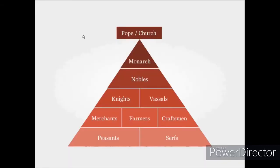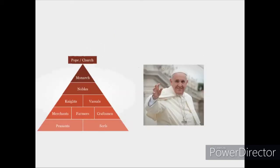This system of governance created a new social structure in medieval Europe, like this pyramid here. We will start above the pyramid with the Pope. He was in charge of the Catholic Church, and it was powerful. Peasants and kings alike followed their every command. As a peasant, you were actually required to give 10% of your crops to the church, called a tithe.